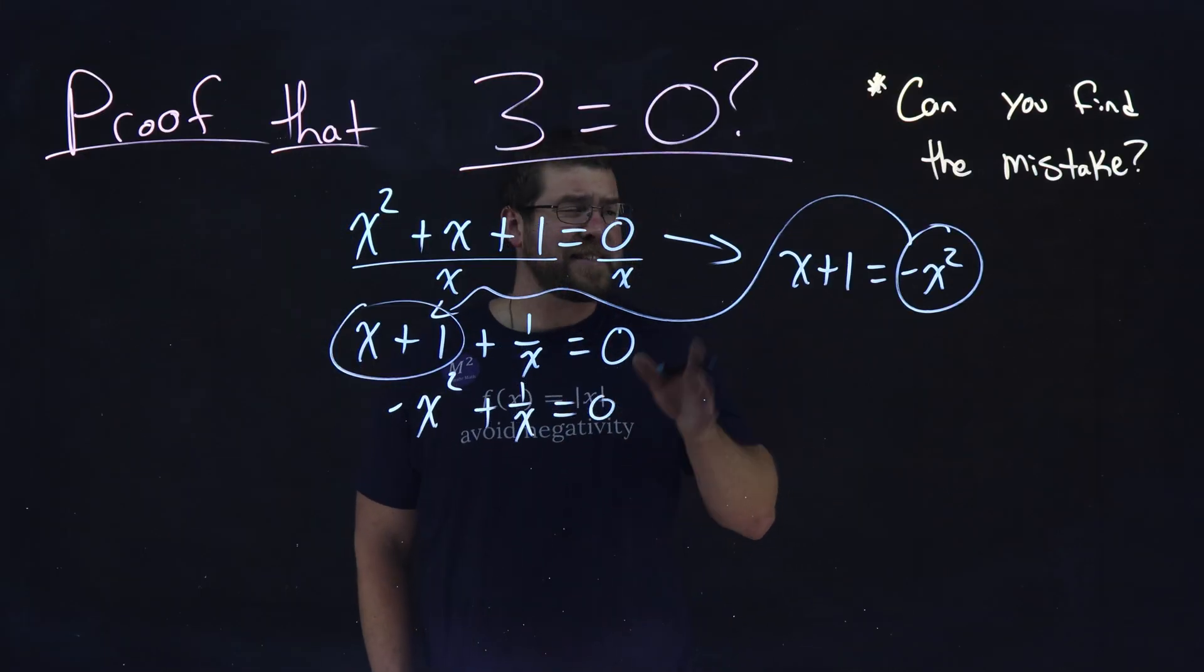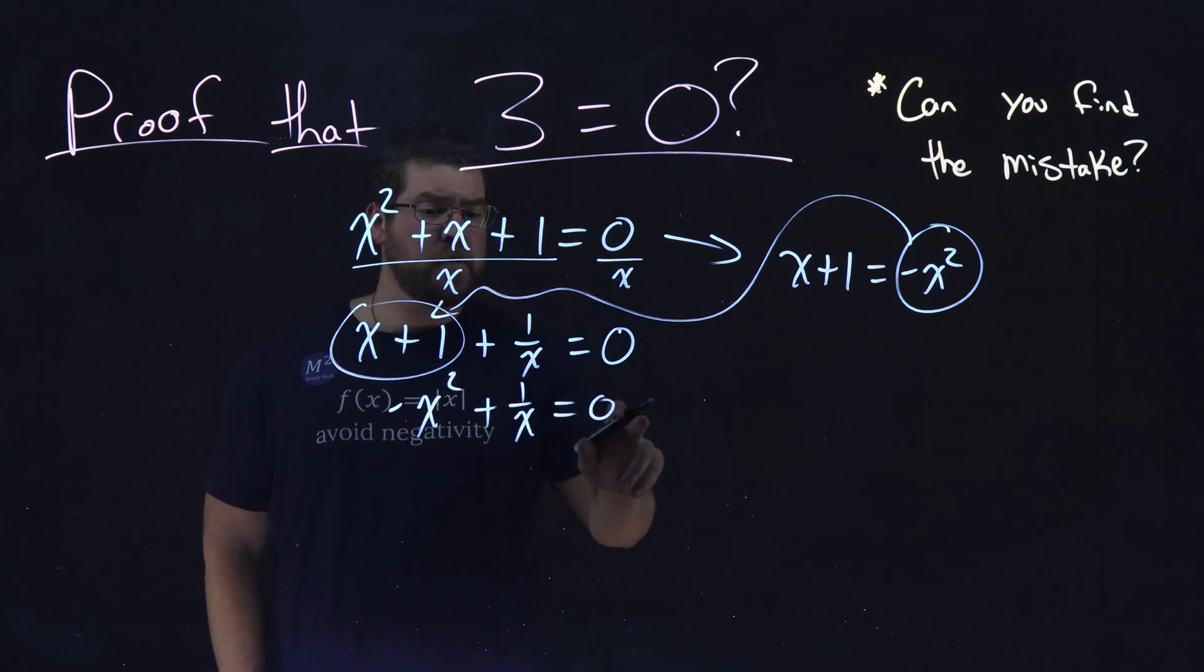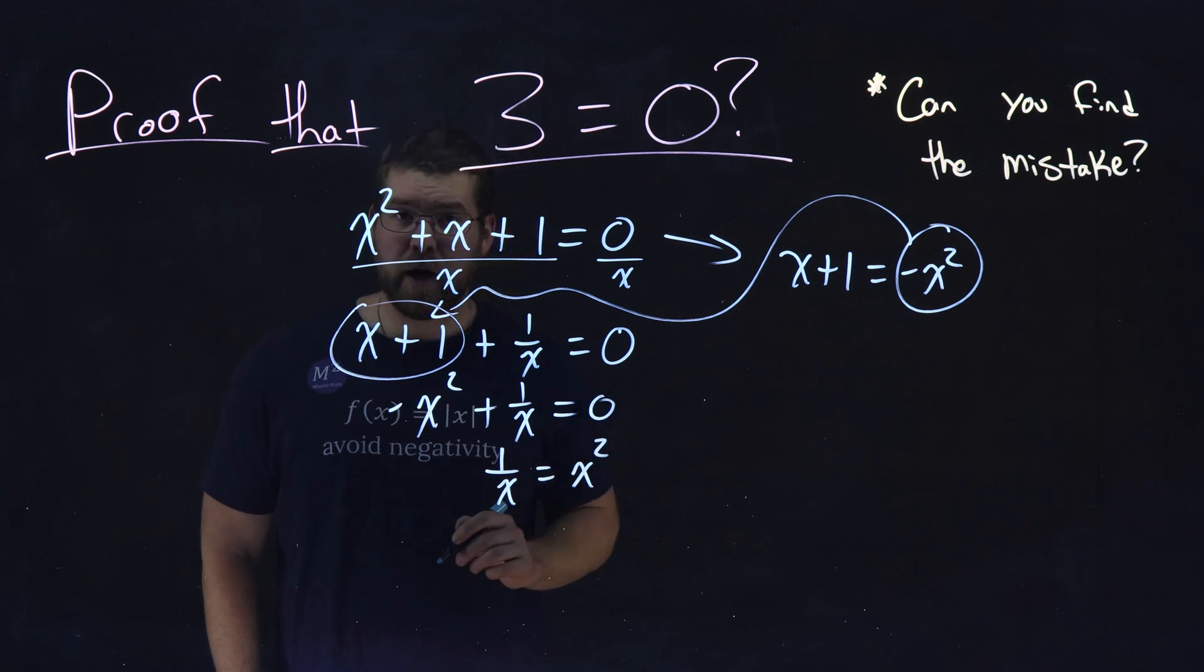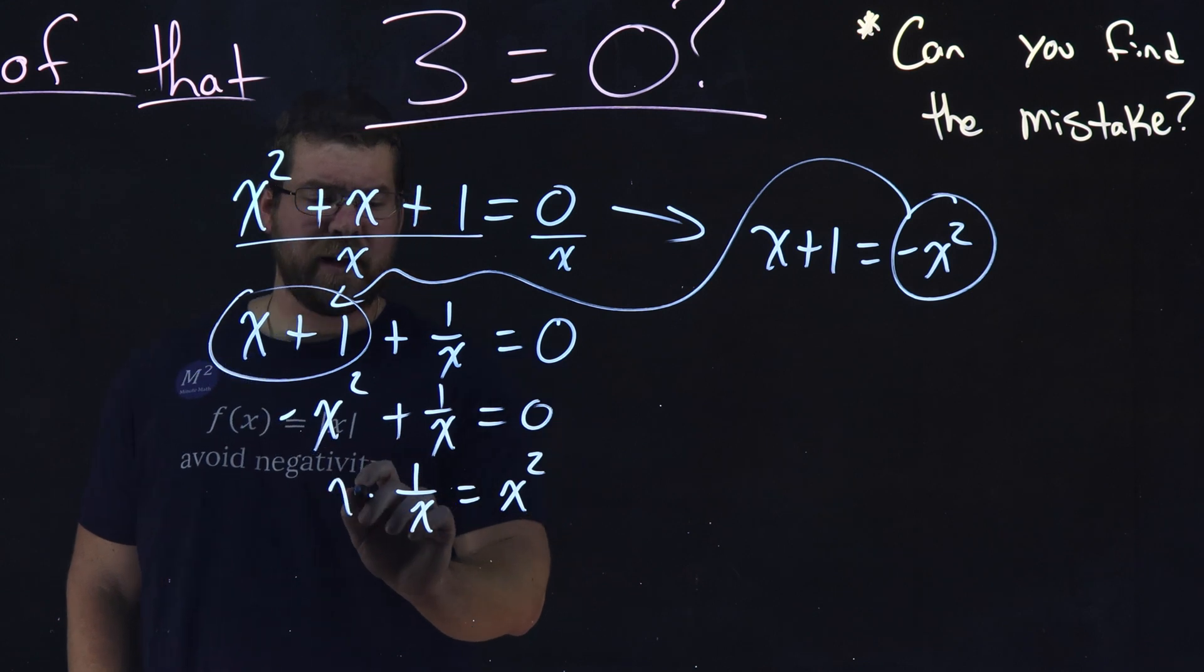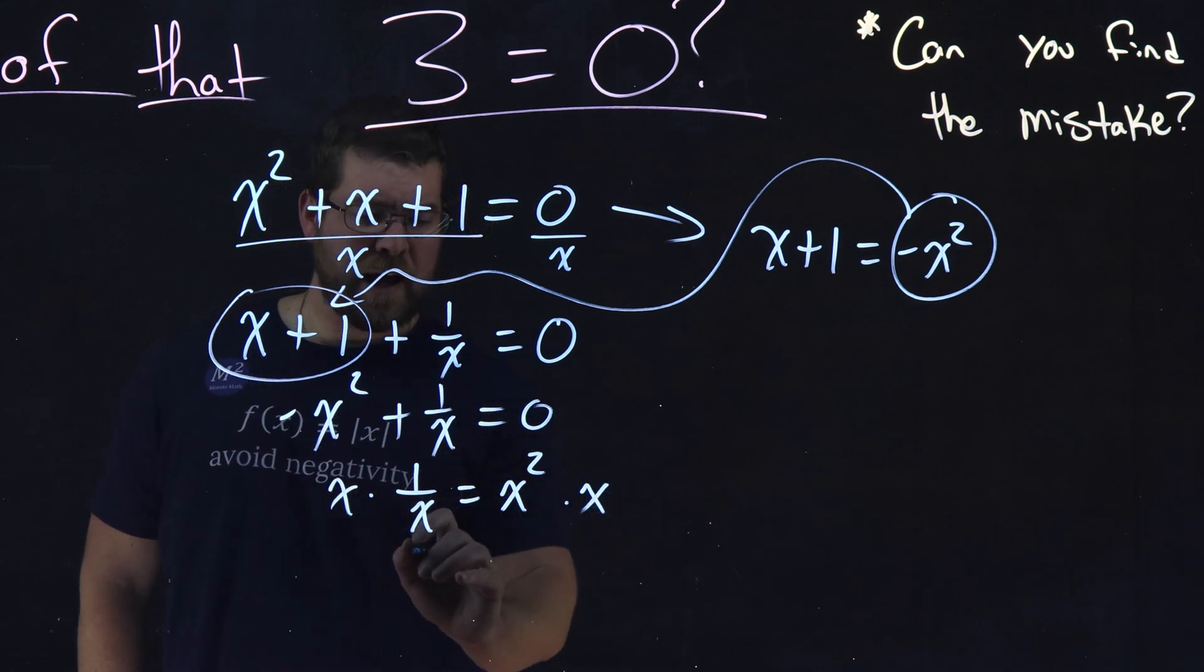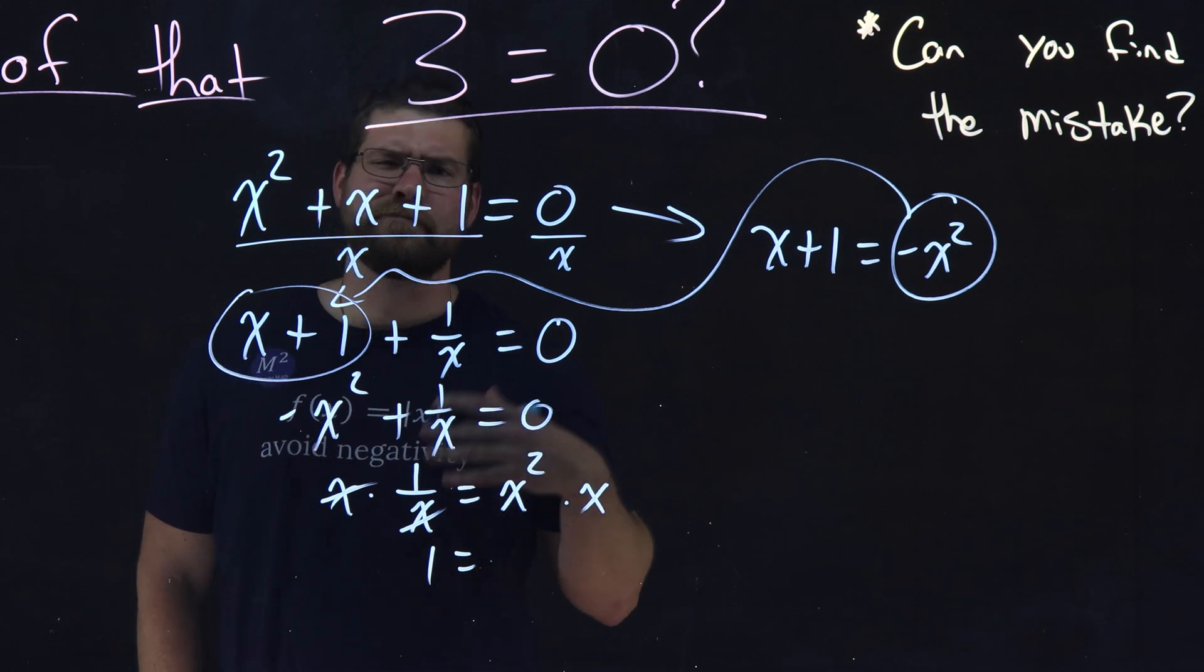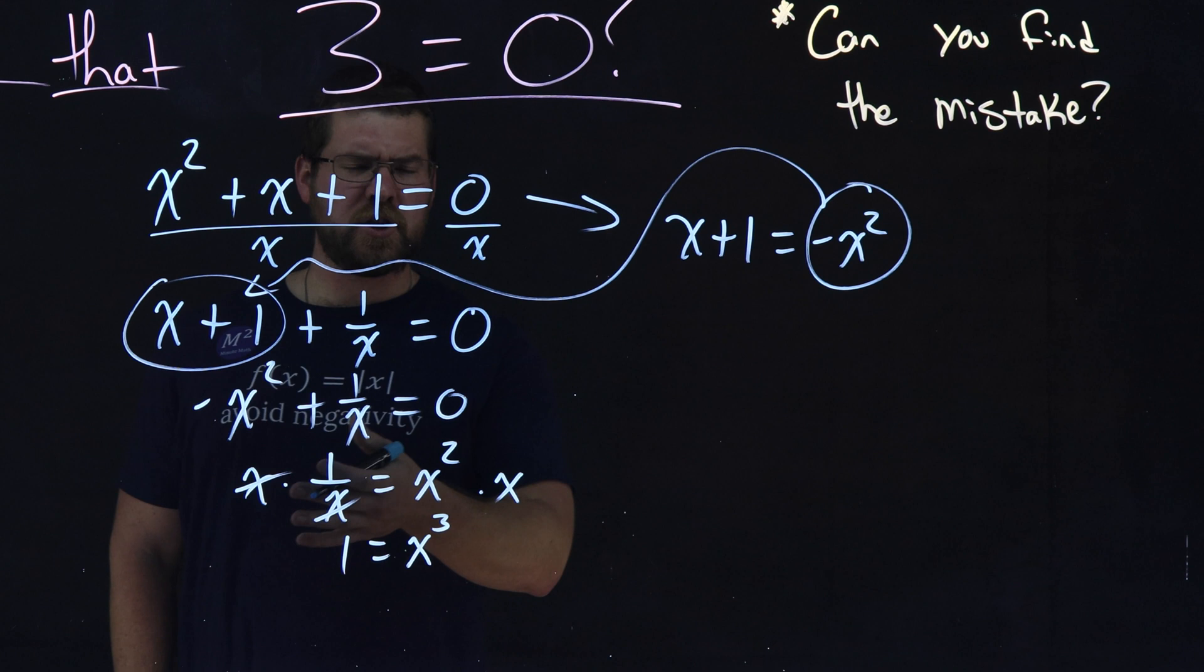So since I haven't done anything wrong, let's keep on that same track. I'm going to add x² to both sides and I have 1/x = x². From there, let's just multiply both sides by x and some magic happens. It cancels. We have 1 = x² × x, which is x³. You knew that. Well, we have 1 = x³.